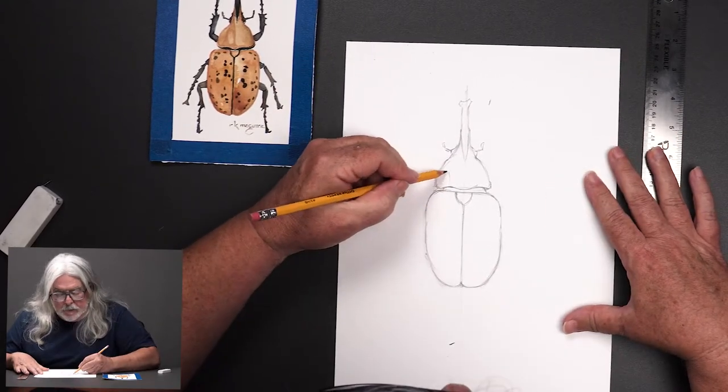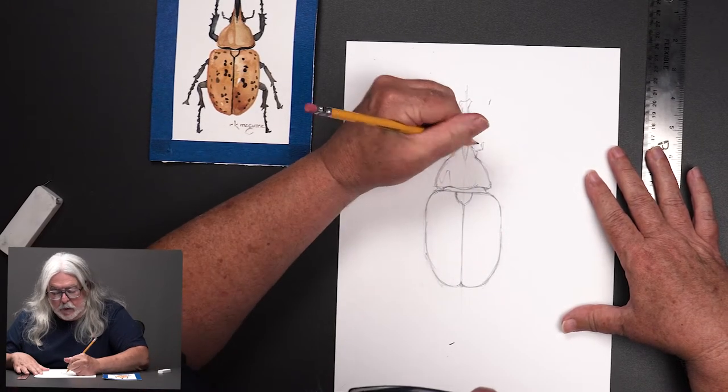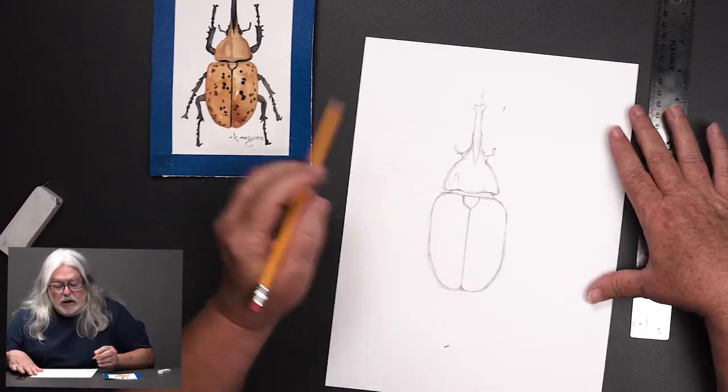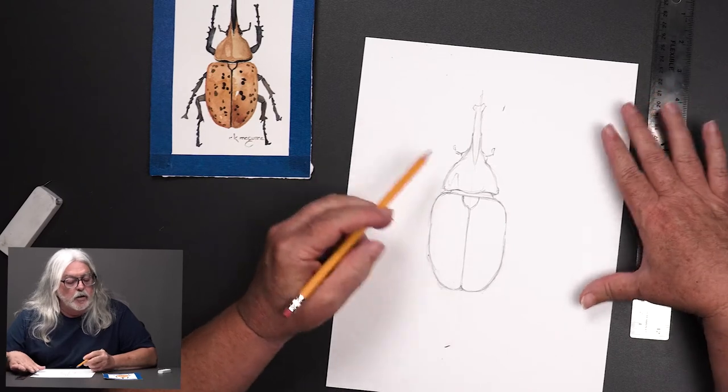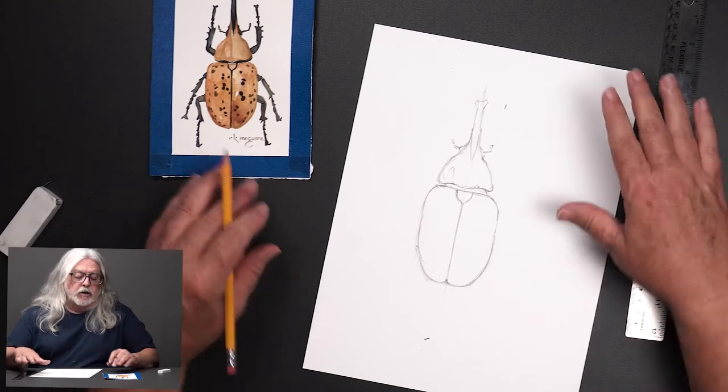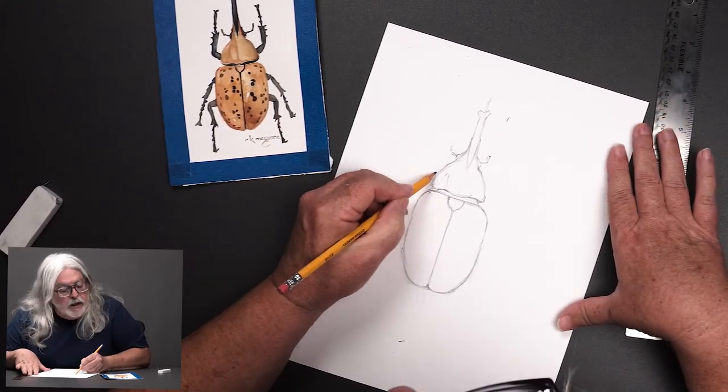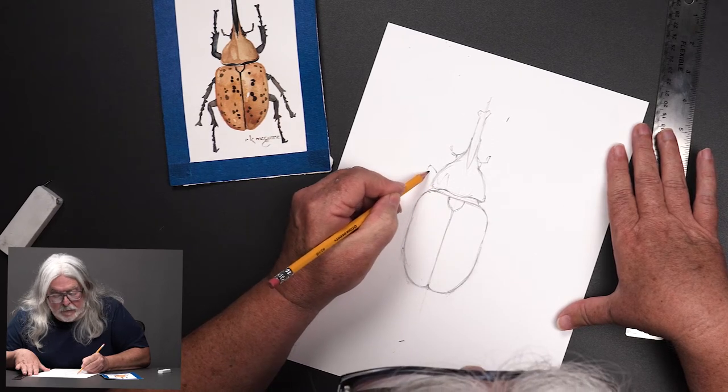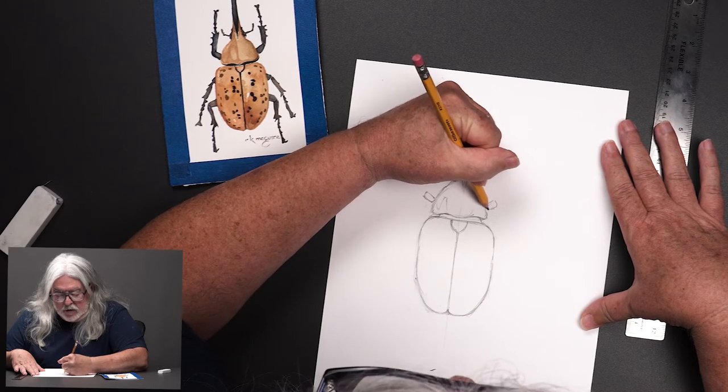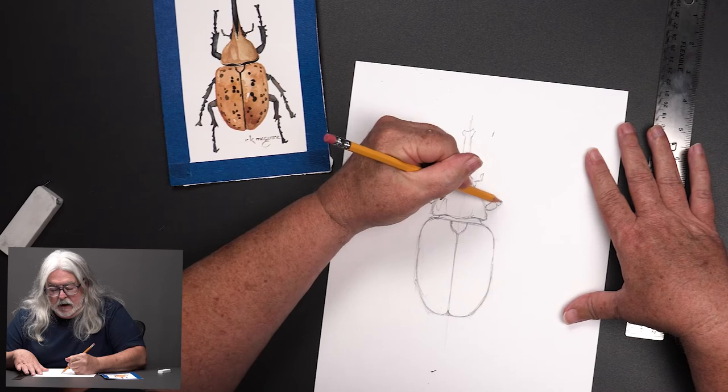At this point I would probably go ahead and start on the legs. Now again the legs are symmetrical, whatever you do to one side do to the other. Now they might be in a little different position but for the most part, one leg is coming out of this chunk of the body right here. Well when I say one I mean two, a set of legs.